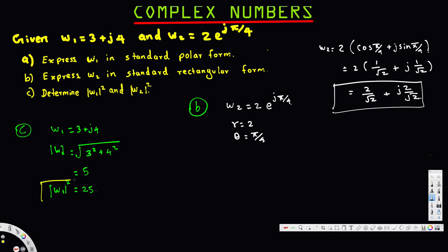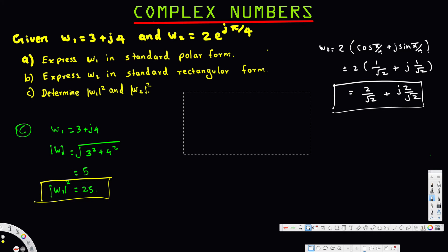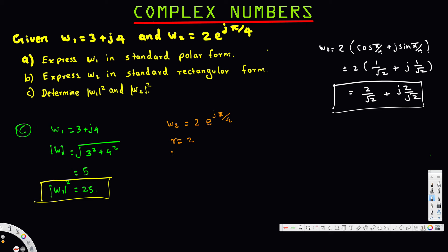Now for w2 magnitude squared: w2 equals 2 e to the power j5 over 4, so here r equals 2. Since r is the magnitude, w2 magnitude equals 2, and therefore w2 magnitude squared equals 2 squared, which is 4. When the complex number is in polar form, we simply pick up the r value and square it, rather than computing it from real and imaginary parts. That is how we solve this kind of problem.